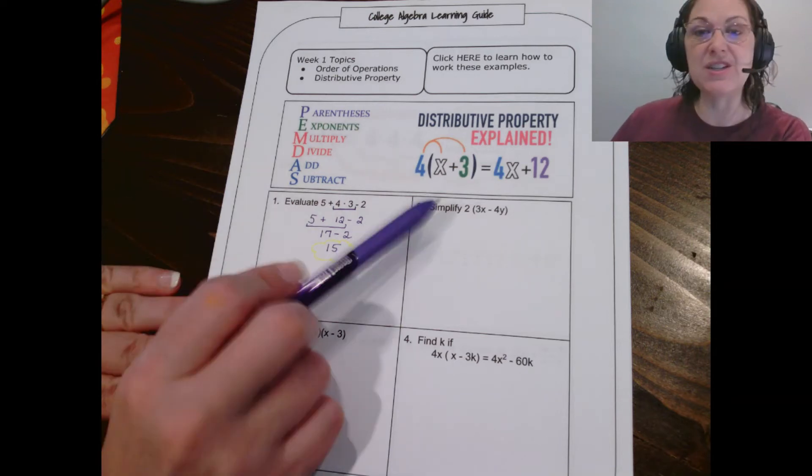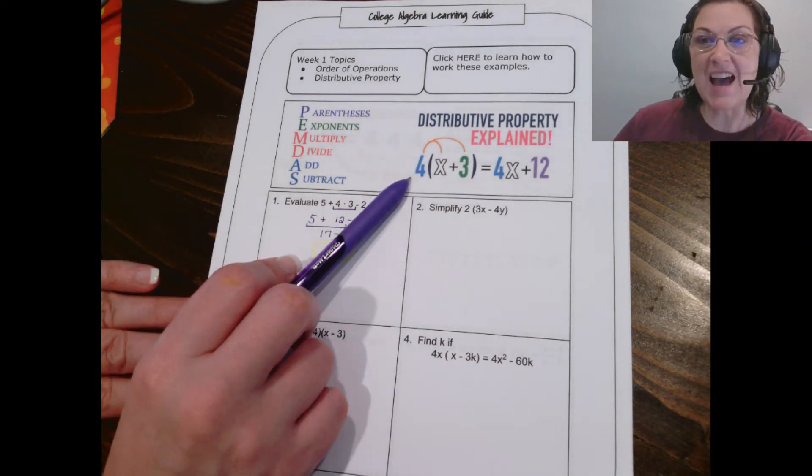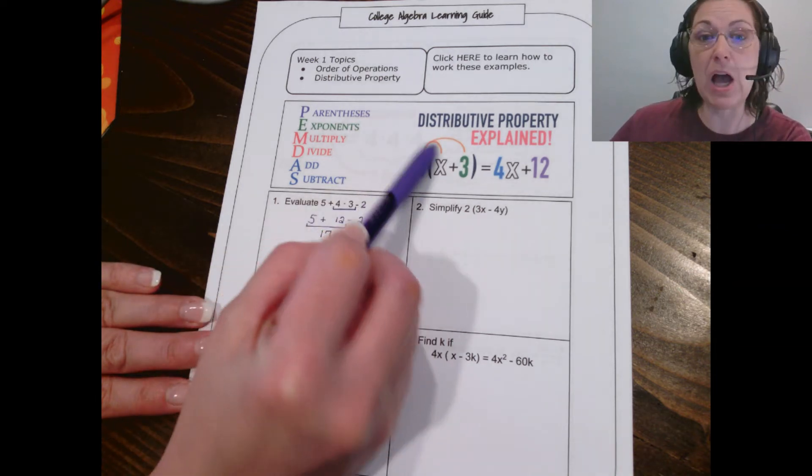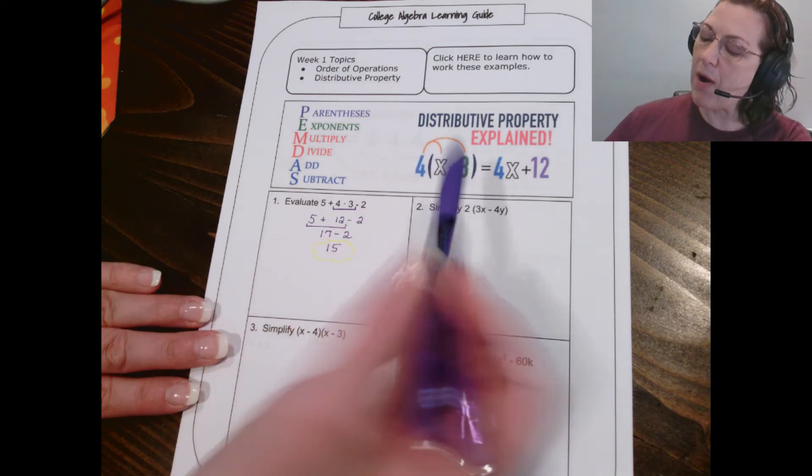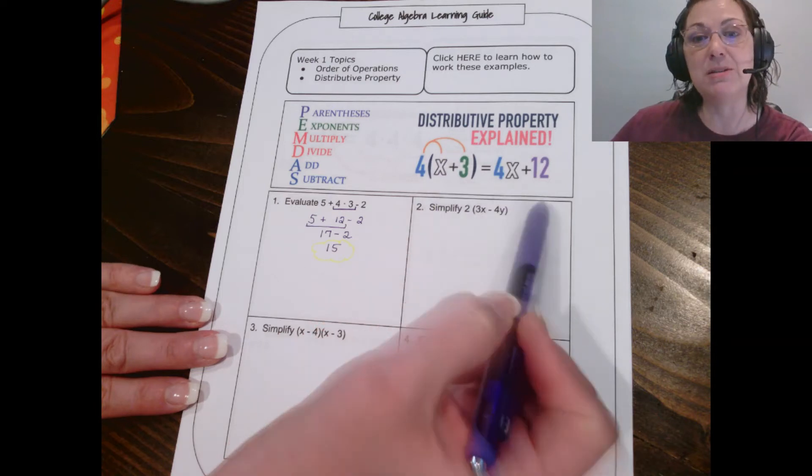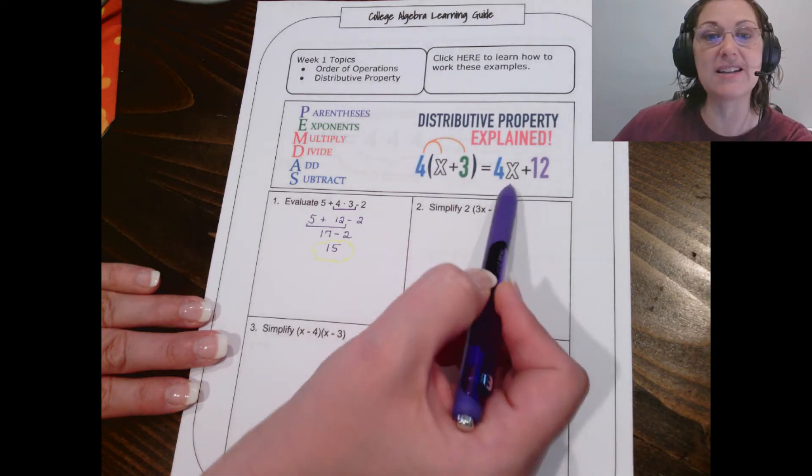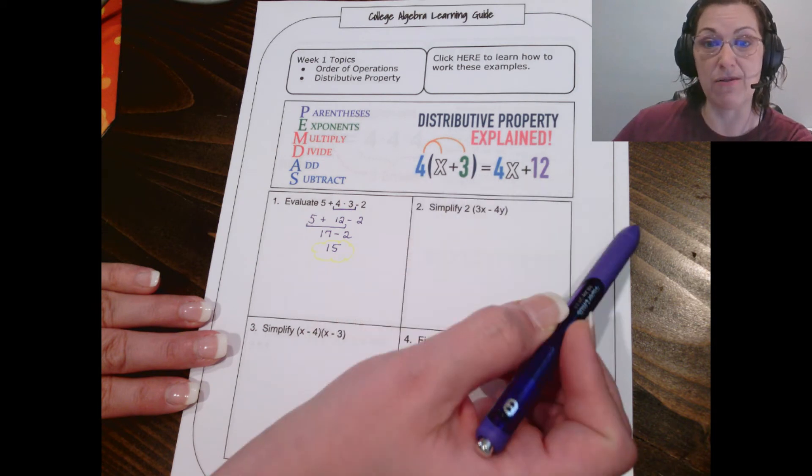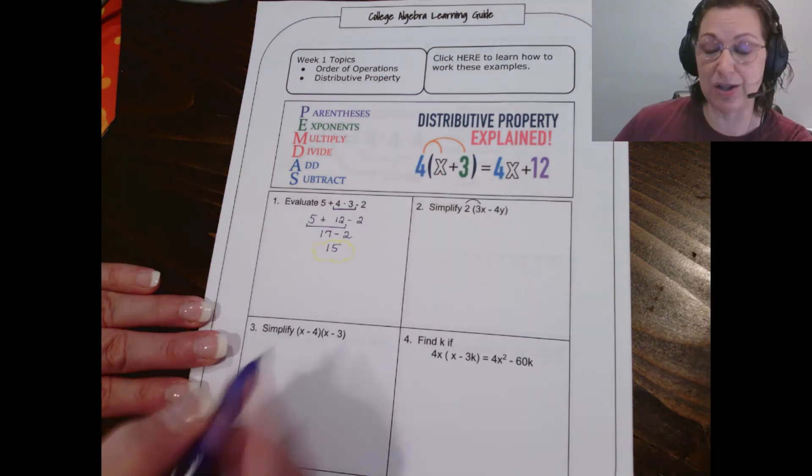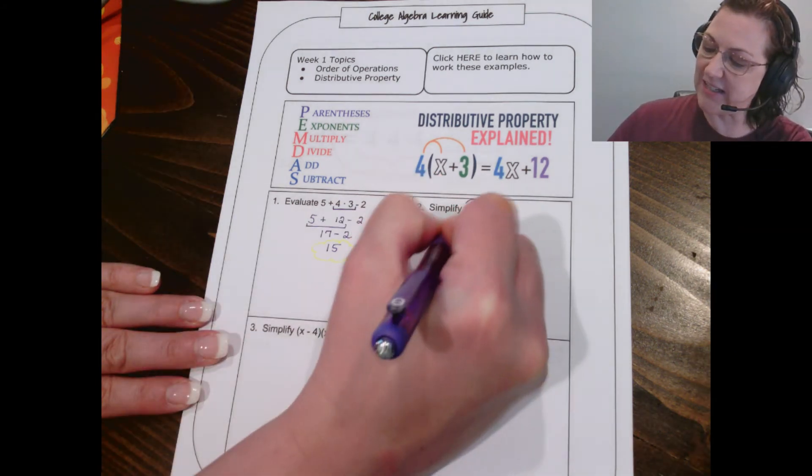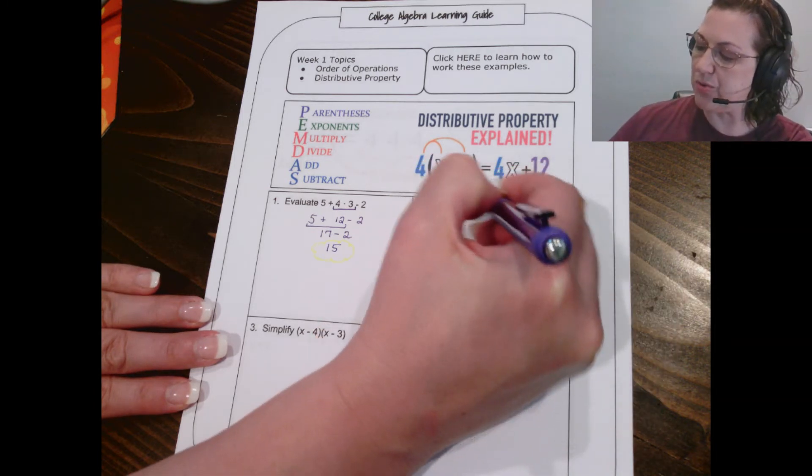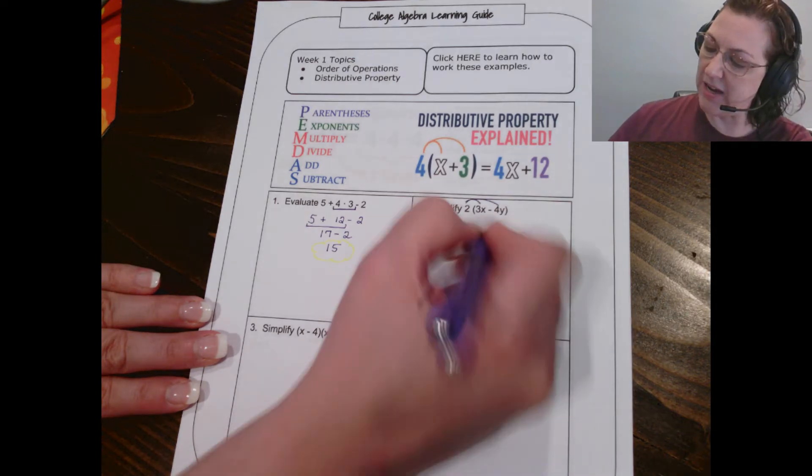Our next problem focuses on the distributive property. And I know it sounds crazy and corny, but sometimes we teach students that's the hippity-hoppity distributive property, right? When we distribute the 4 to each term in this parentheses, we multiply it. So, 4 times x gave us 4x, 4 times 3 gave us 12. Let's try it in our problem. We'll distribute the 2 to the 3x, which will give me 6x, minus, because there's a minus in the parentheses. Then we distribute the 2 to the 4y, which gives me 8y.